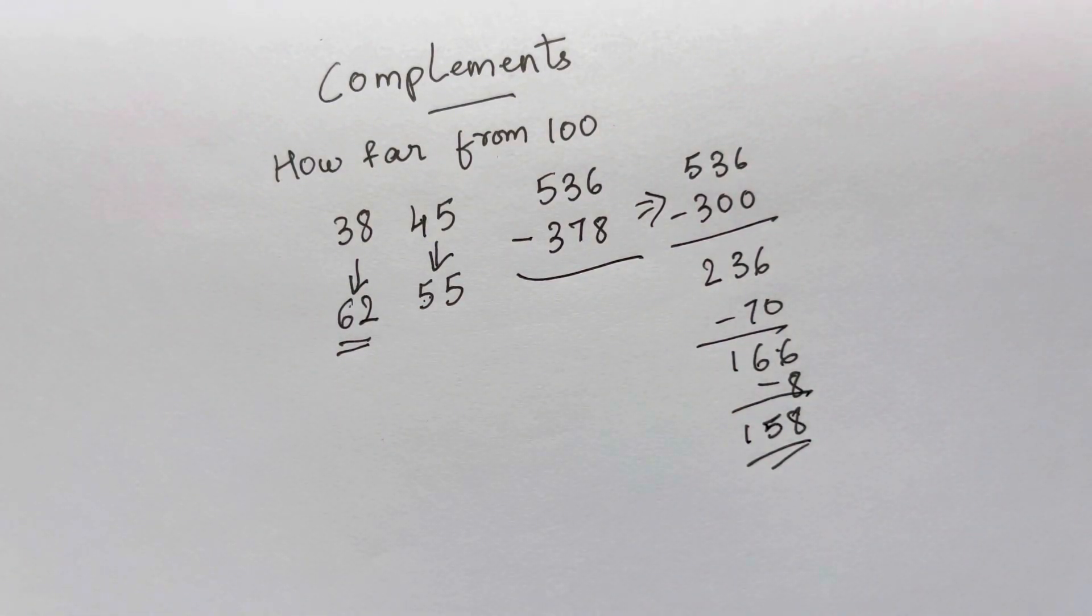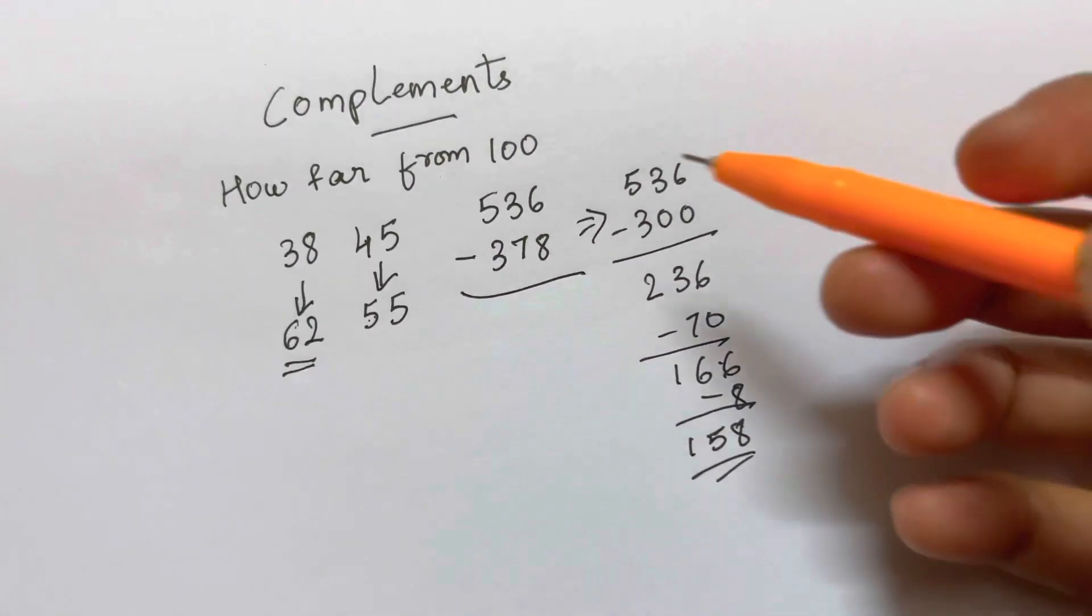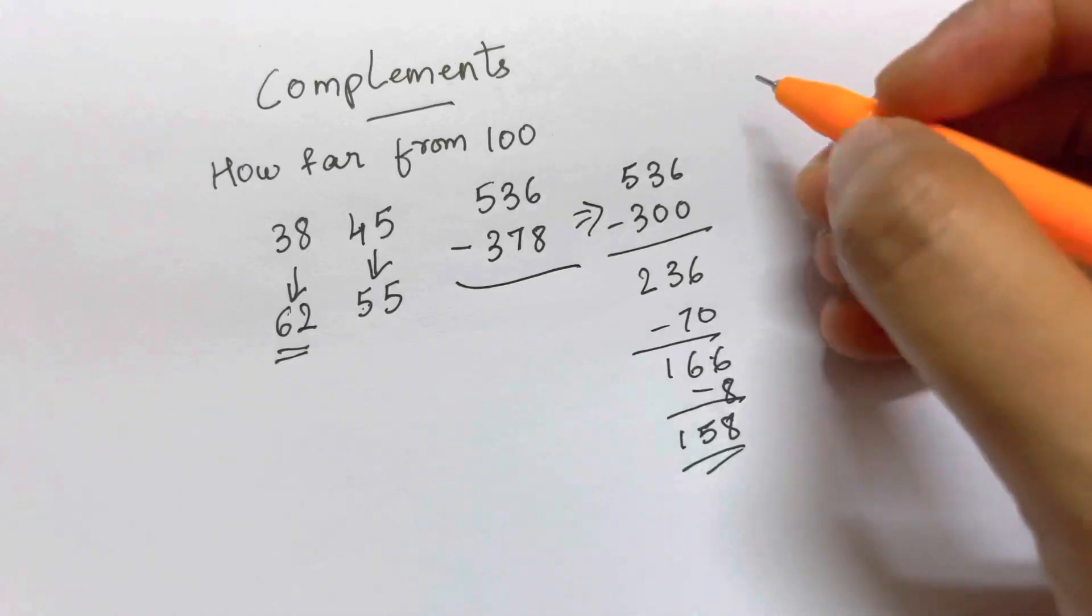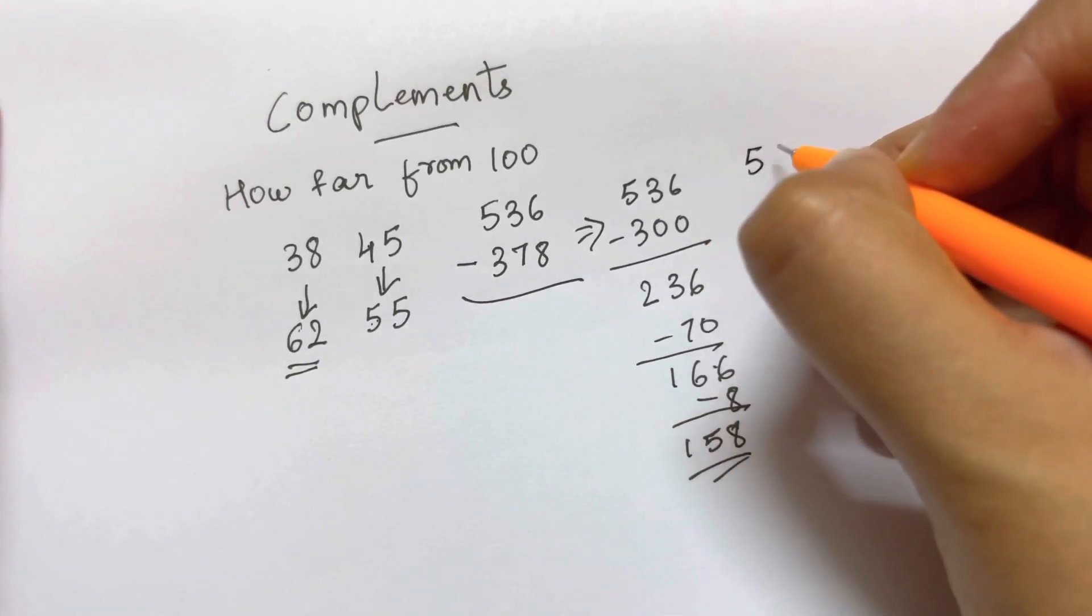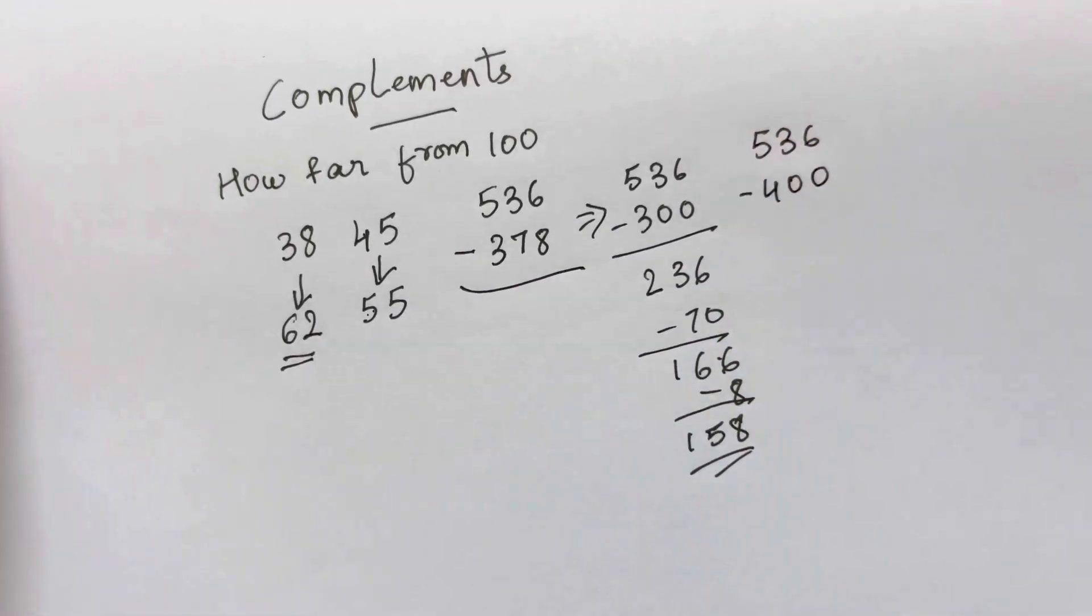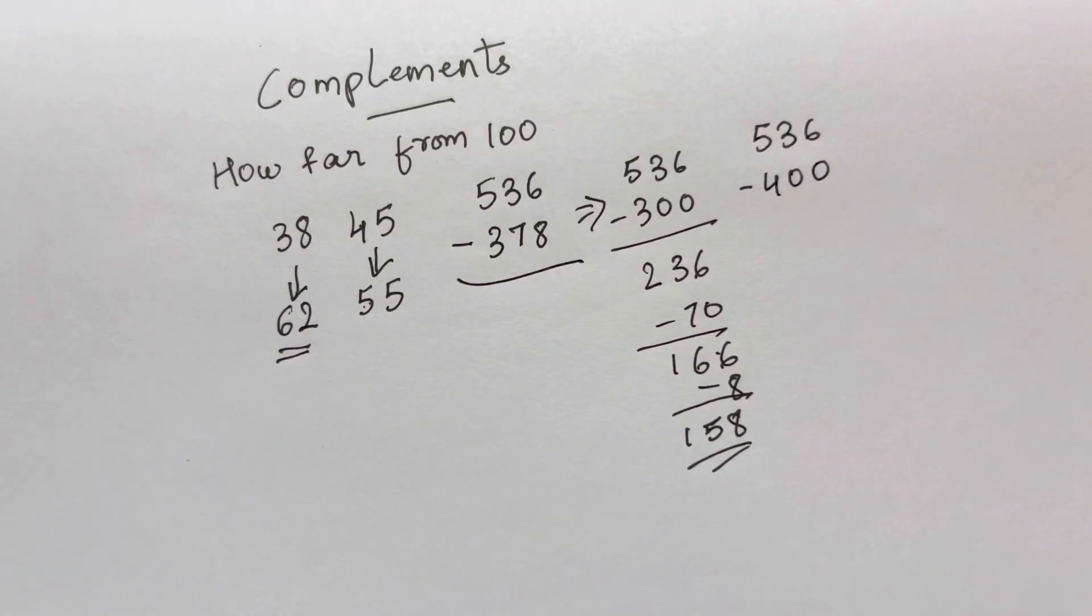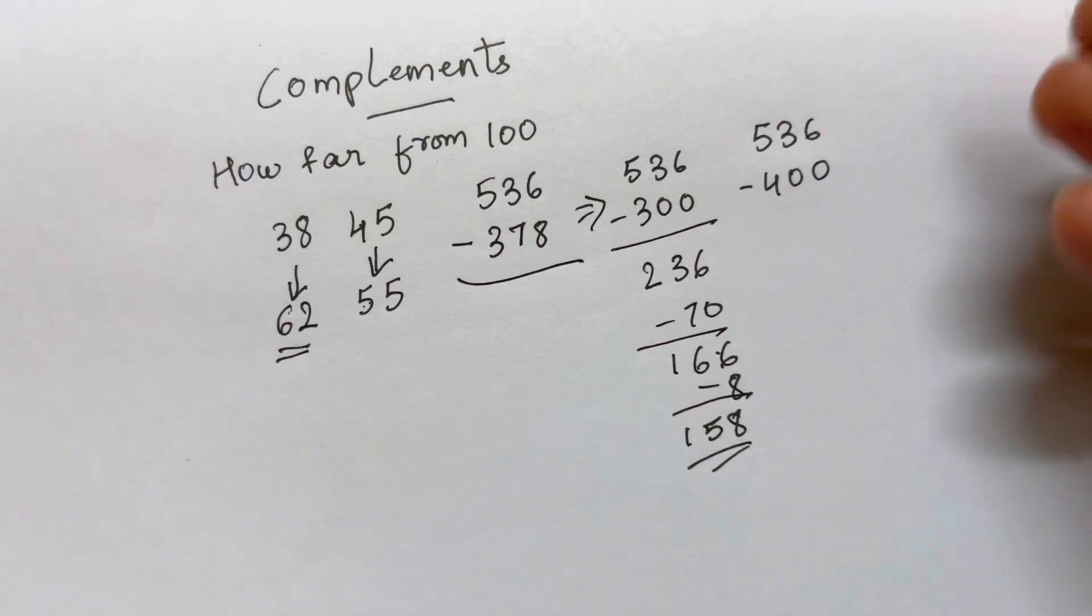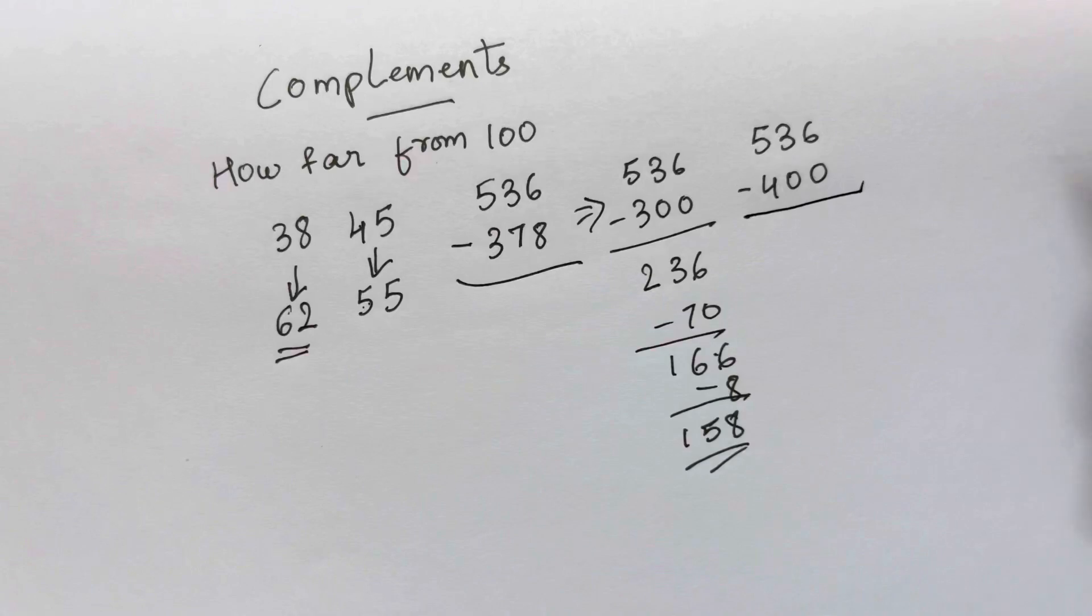Now, if we'll go other way round. Now, we have done 536 minus 300. Now, I'm going to round off to 400. 536 minus 400. This was usually also, you know, it took some time for you to do it in mind. Now, you should be more creative and more quicker. So, we are going to use this logic. Now, for this one.